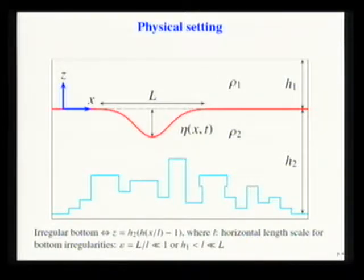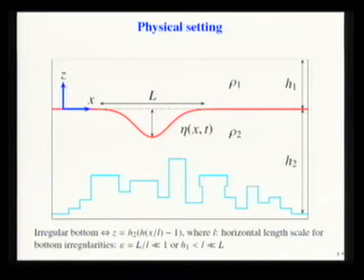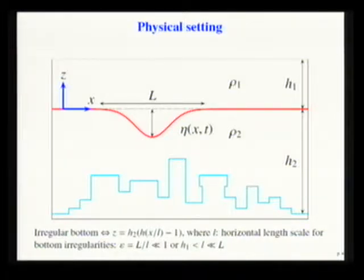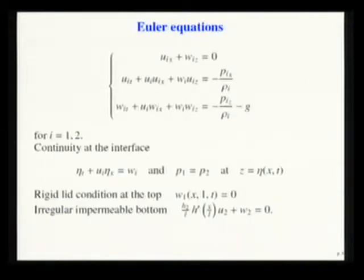The irregular bottom is described in this way, while L is the horizontal length scale for bottom irregularities. If L is greater than the characteristic wavelength, we are in a slow topography regime. On the other hand, if it is much smaller than the characteristic wavelength, we have a rapid topography. The starting point is the Euler equations.